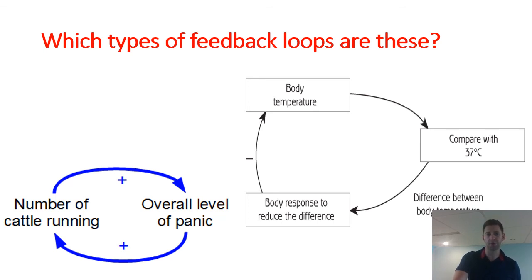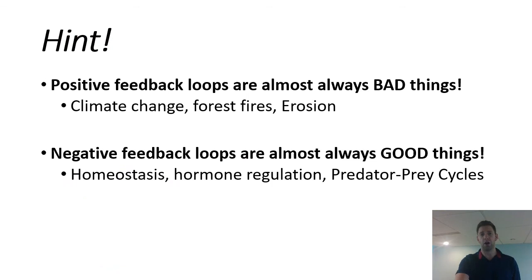Two examples. A stampede is an example of positive feedback. Cows start running. Other cows panic. More cows run. More cows panic. More running. More panic. More running. And then that leads to a stampede. Body temperature, you already talked about. That is a negative feedback. This will help you when it comes time to studying. Positive feedback loops are almost always bad. And negative feedback loops are almost always good. So keep that in mind. It's sort of the opposite of what it sounds like. I know that can be confusing.